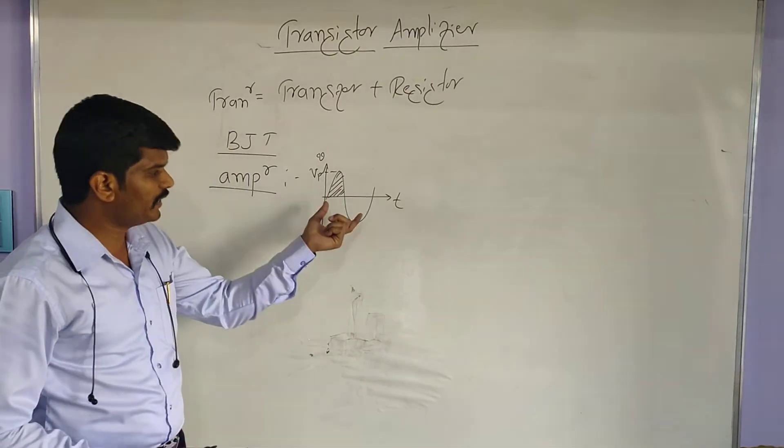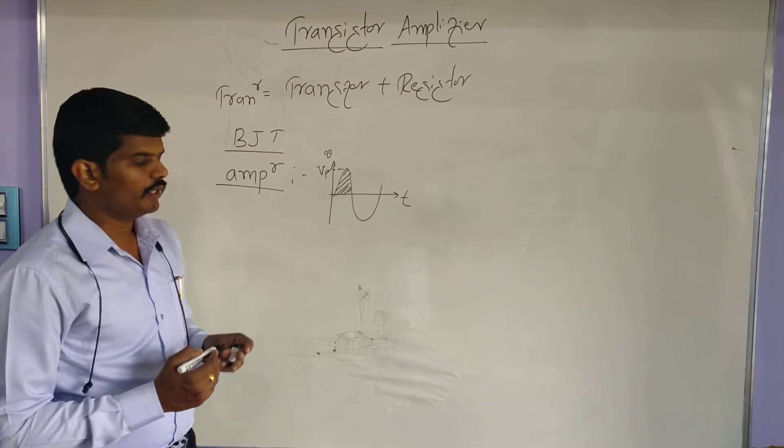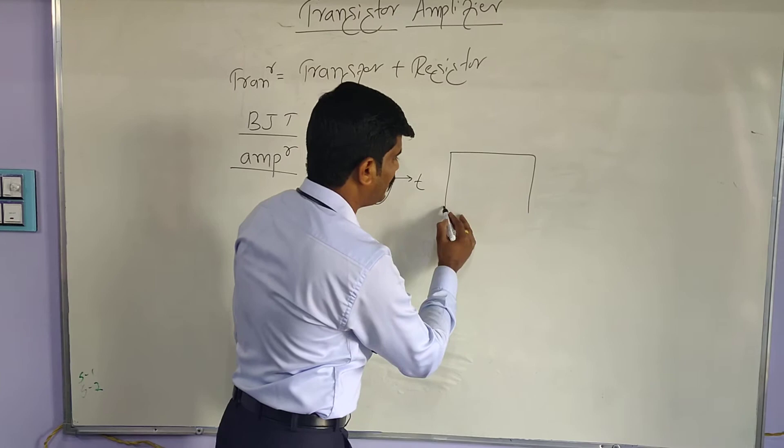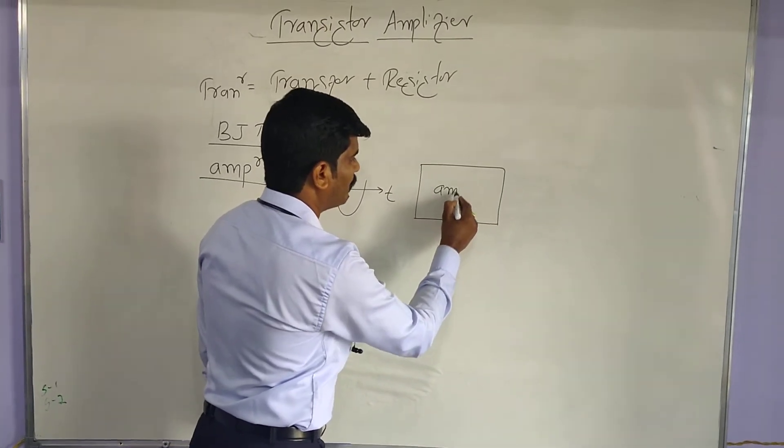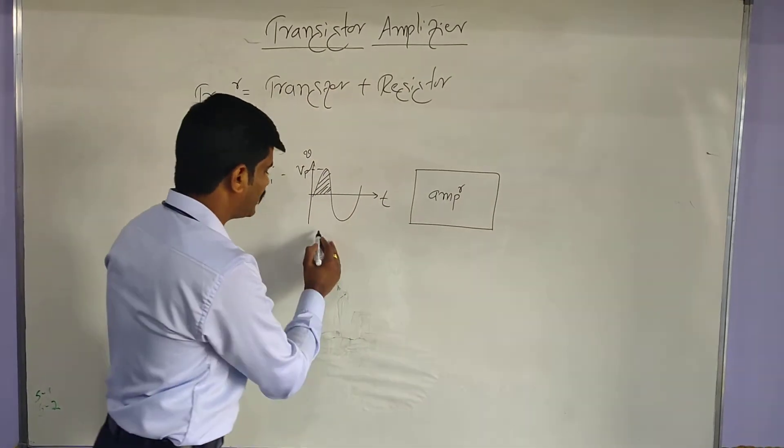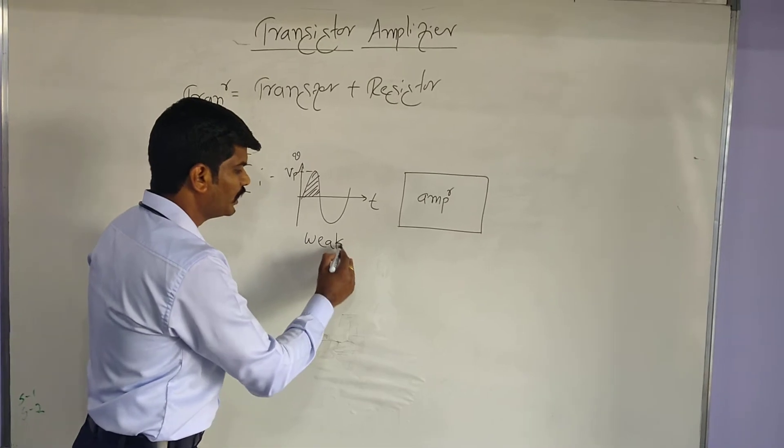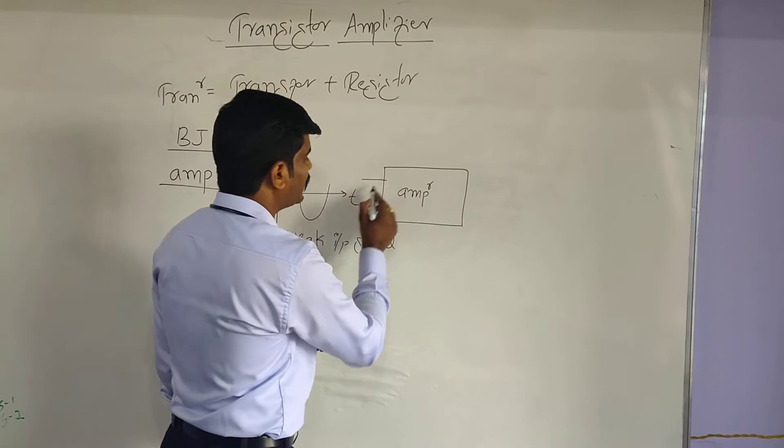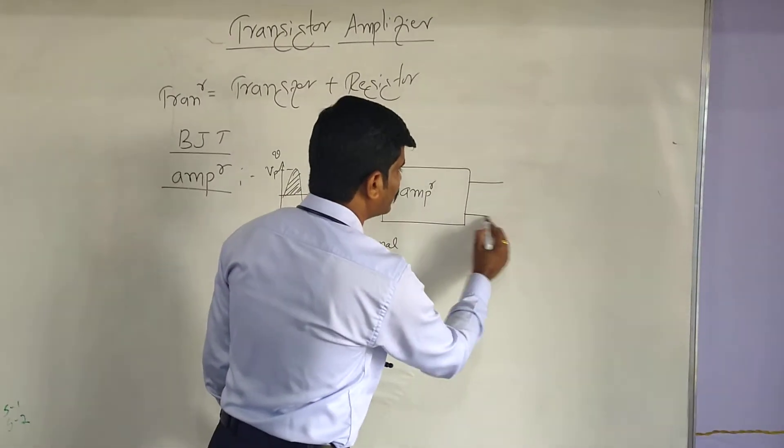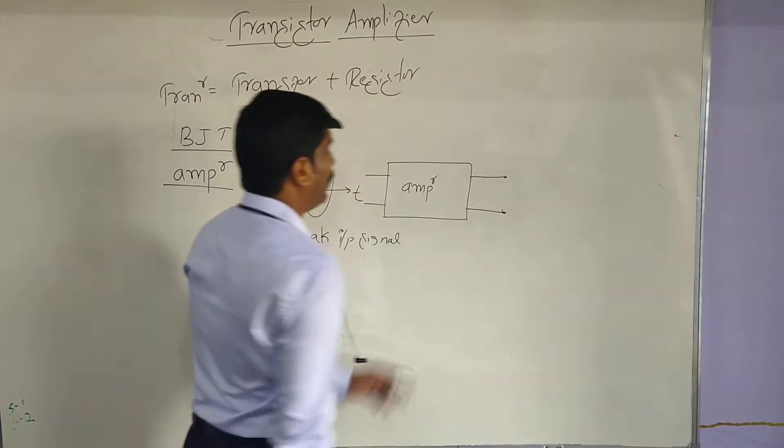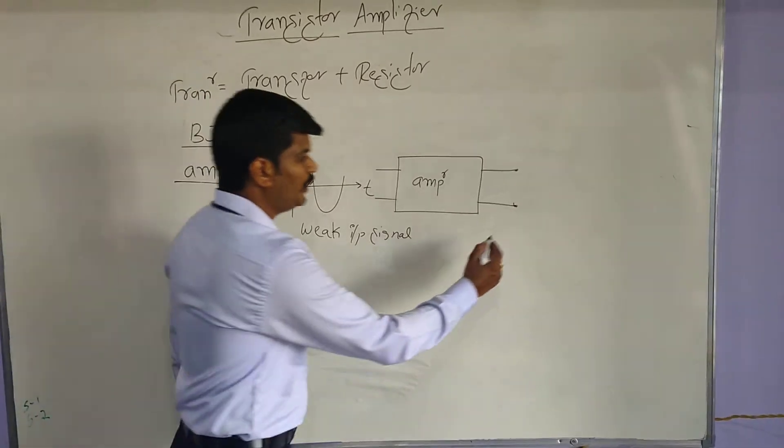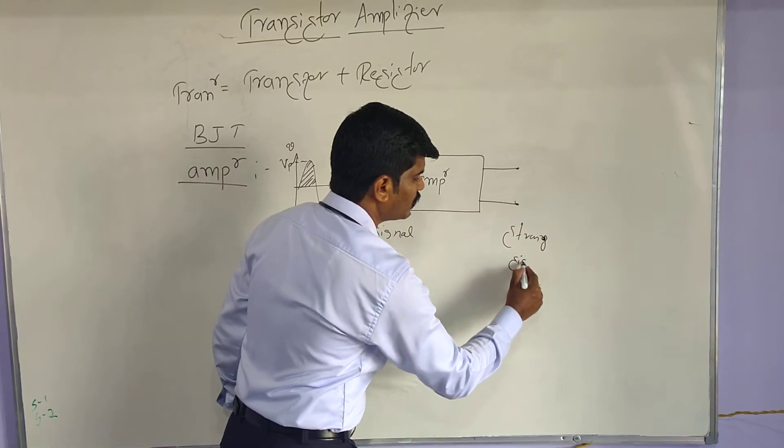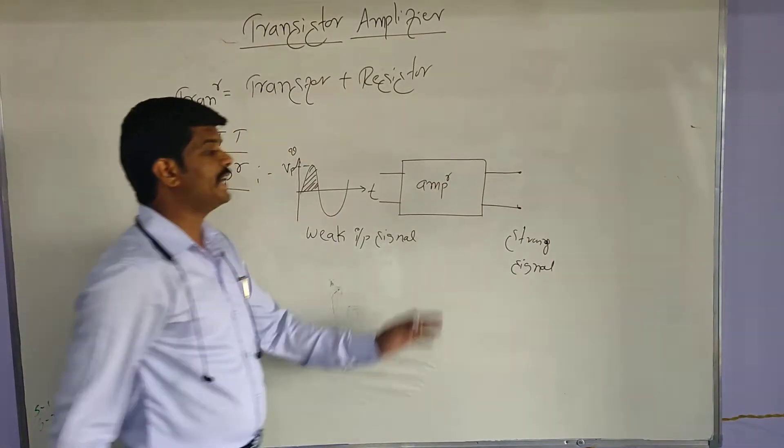Amplifier is a device which converts weak signal into a strong signal. If I am having here an amplifier, for example, if I am applying this weak input, I consider this is a weak input signal. And this weak input signal gets amplified by the device amplifier. So we are getting here a strong signal. What is a strong signal then?